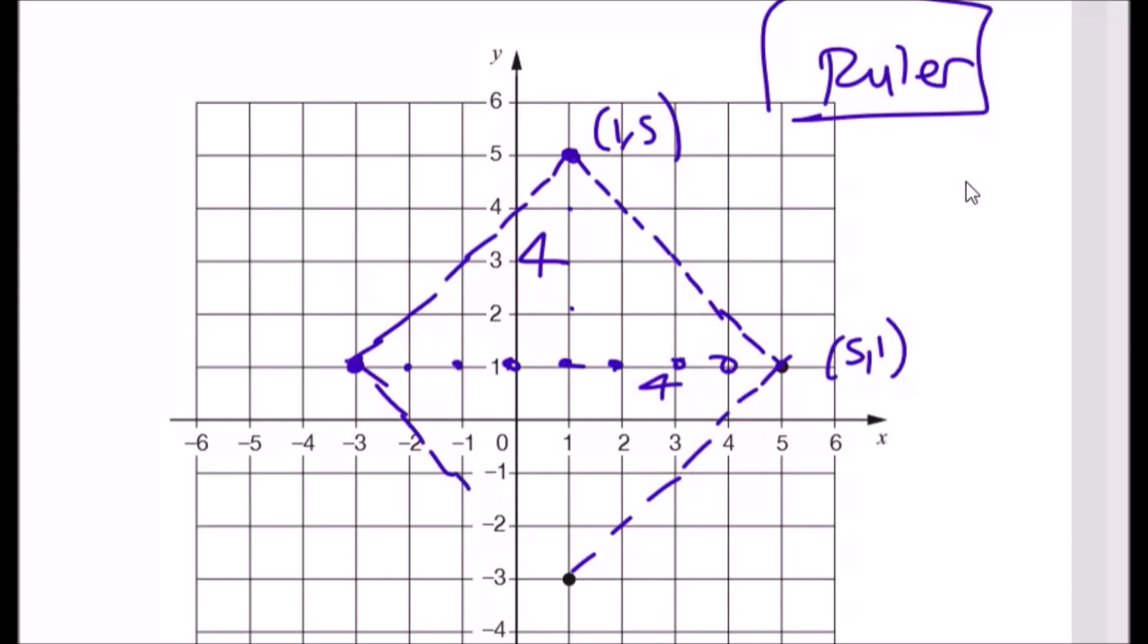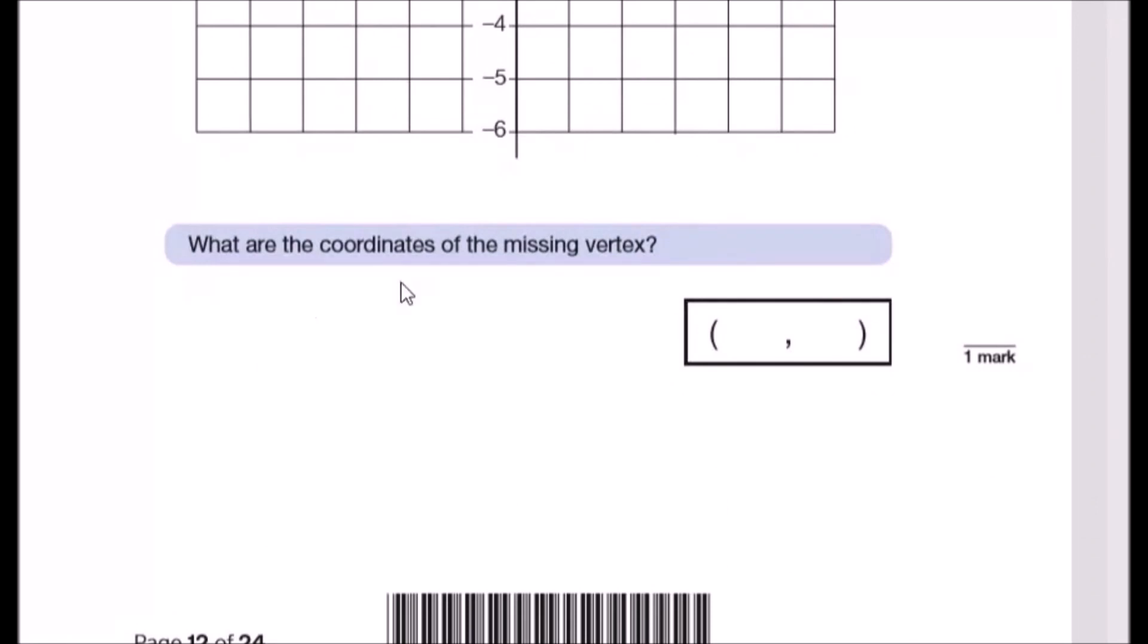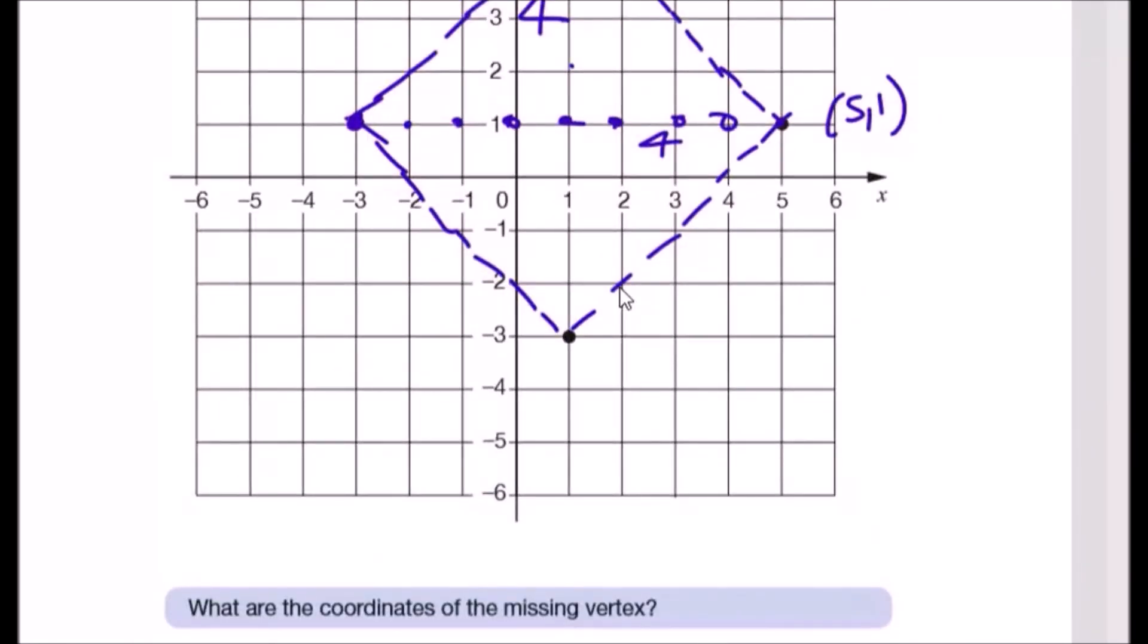But yeah guys, make sure you use a ruler. Never do freehand because you could actually get penalized and lose a mark. So what are the coordinates of the vertex? We can see it is -3 because it's three to the left, and 1 up. So -3 and 1, let's put it down.